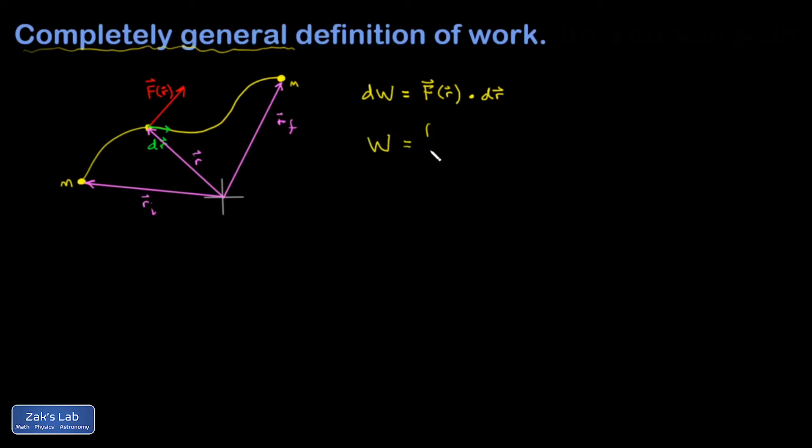Well, this means my total work is going to be the sum of all the contributions to work, the integral of the dws. And so I would go from my initial position to my final position, adding up all those little work increments, F of r dotted into dr.